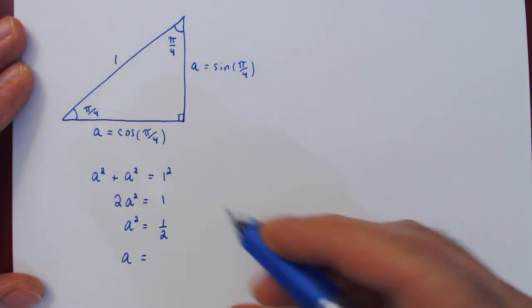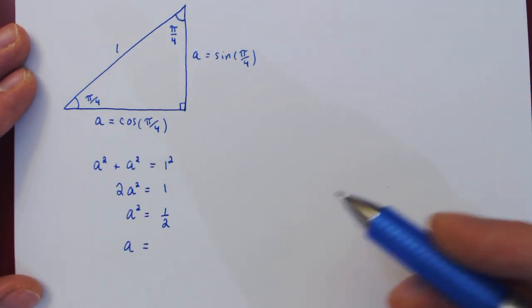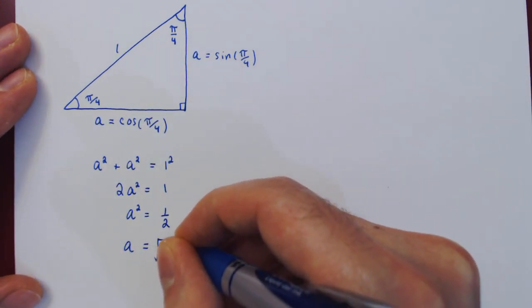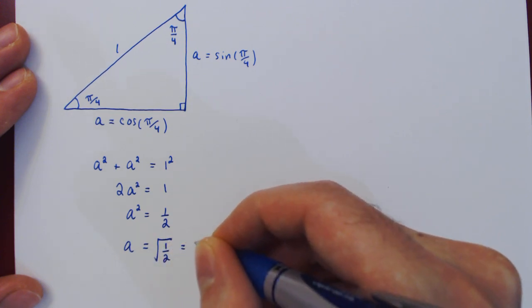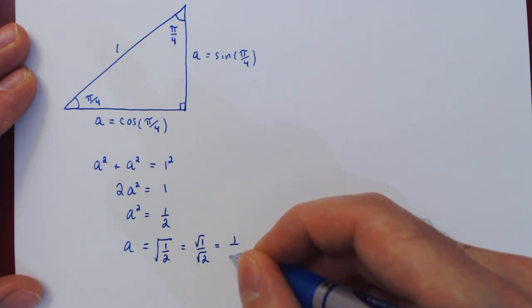Take the square root, and since A clearly is positive, then we only consider the positive solution being the root of 1 over 2, which is the root of 1 over root of 2, which is 1 over root of 2.